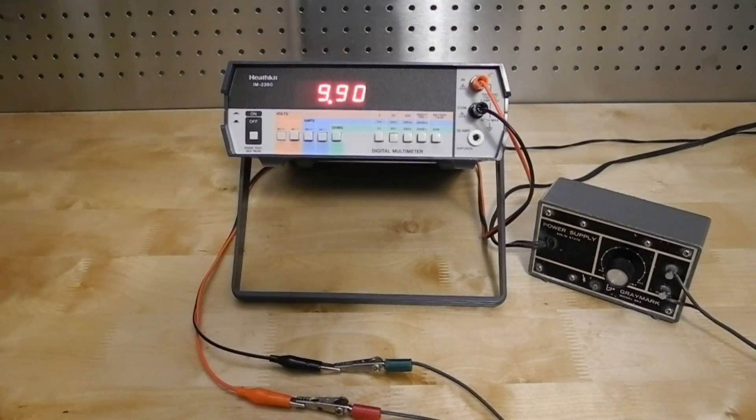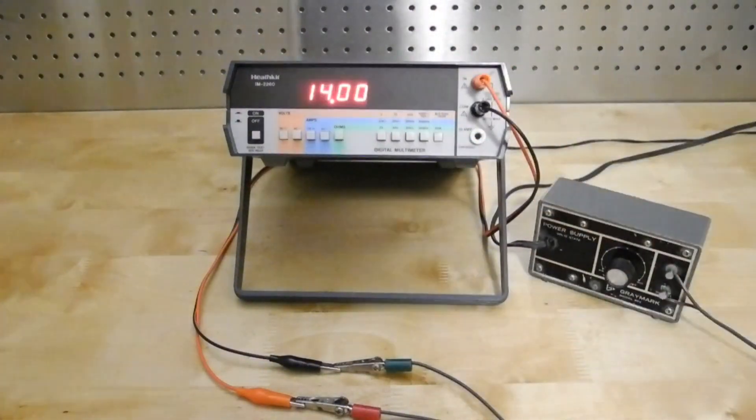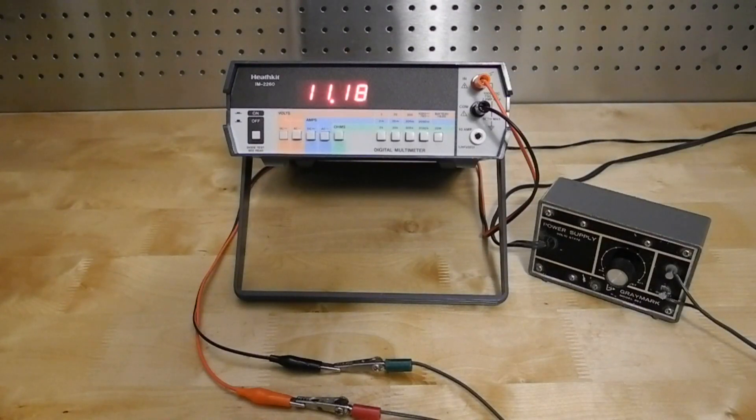Over range is shown as a leading one. The last range for DC volts is a battery voltage test. A reading of over 6 volts indicates that the batteries, if present, are adequate.